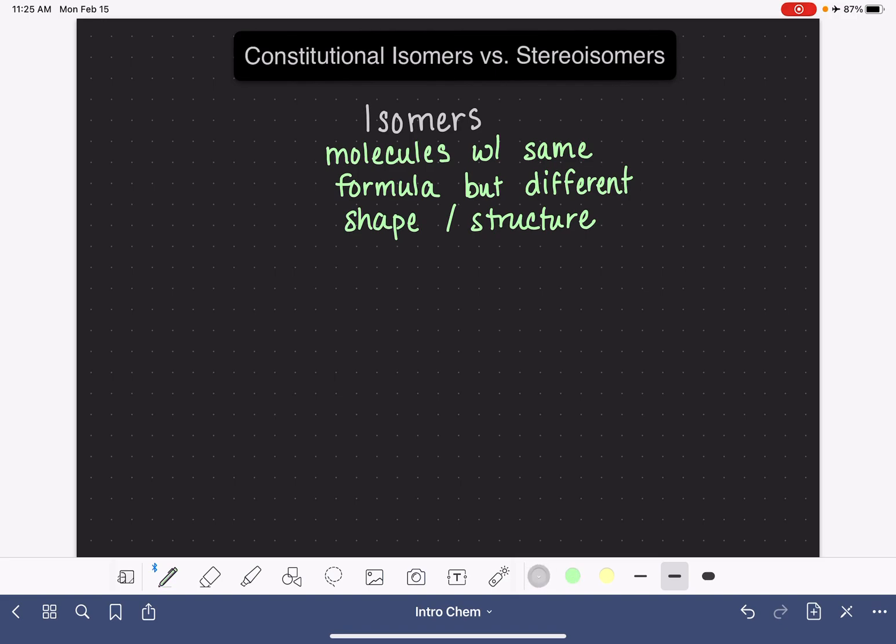There are several different types of isomers. Constitutional isomers is one type. Stereoisomers is another type.